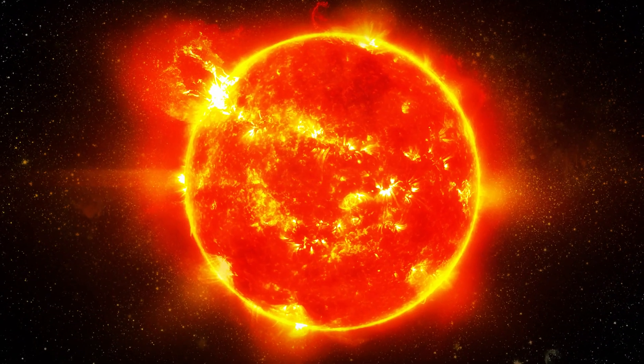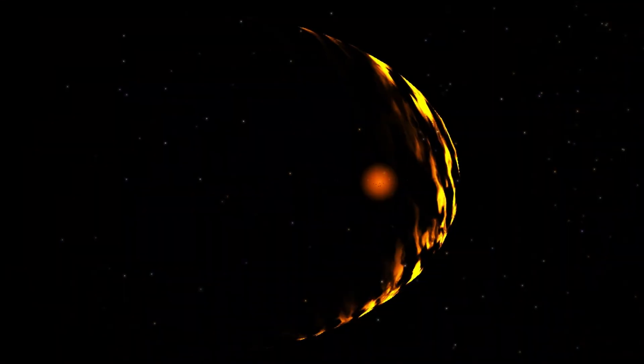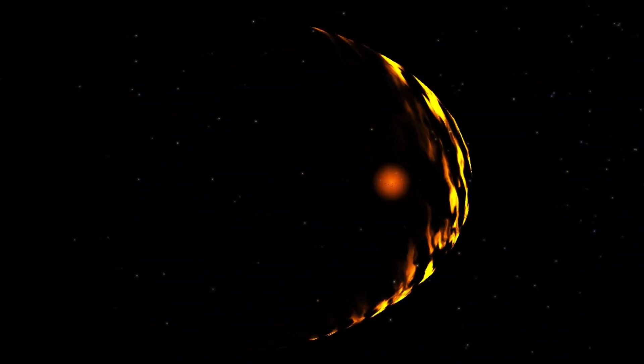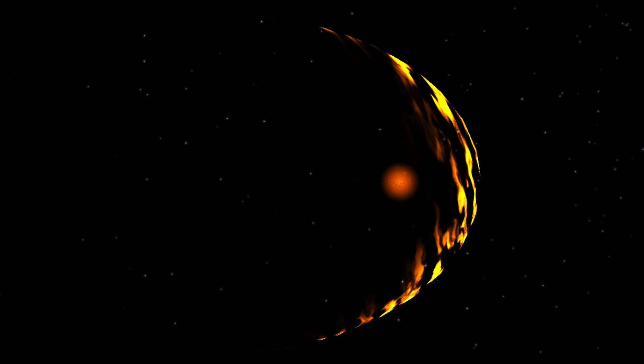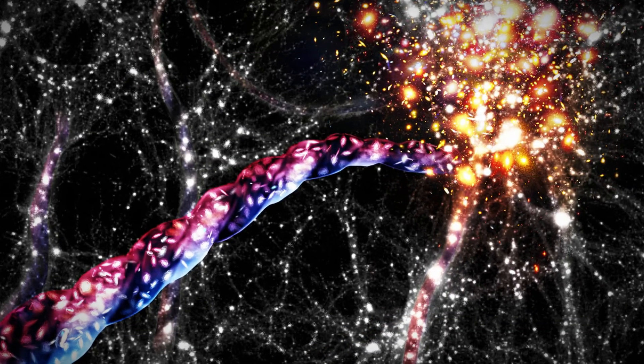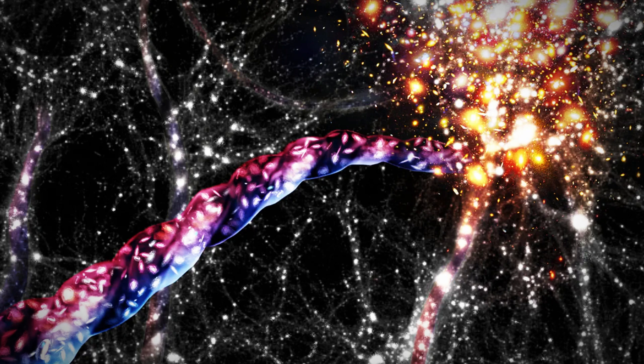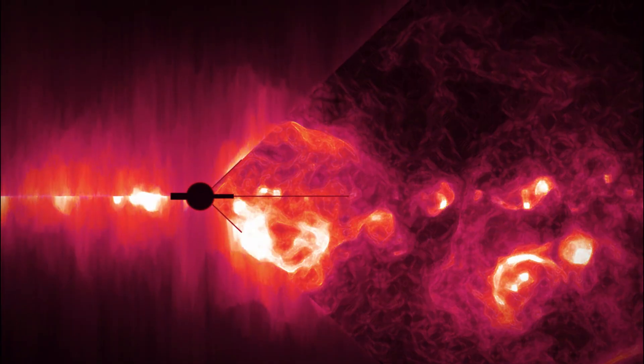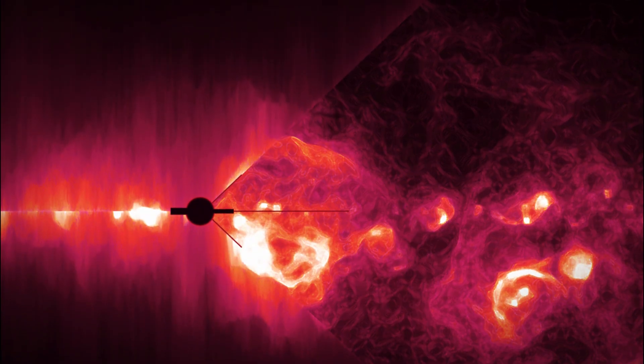These invisible lines defined the sun's reach, marking the boundaries of the heliosphere, the protective shield that separates us from the interstellar void. Yet, on the brink of this cosmic threshold, Voyager detected an eerie whisper, a faint hum of interstellar plasma, hinting at the mysteries beyond.